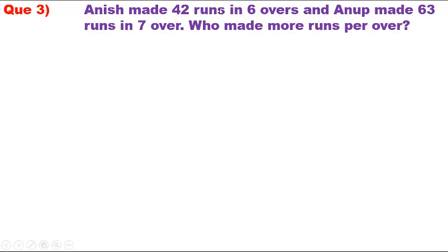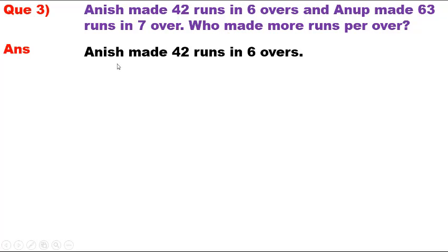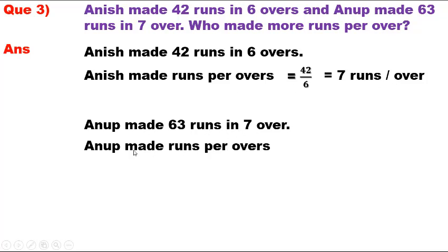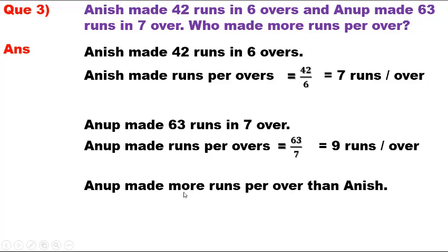Question 3. Anish made 42 runs in 6 overs and Anoop made 63 runs in 7 overs. Who made more runs per over? Anish made runs per over = 42 / 6 = 7 runs per over. Anoop made runs per over = 63 / 7 = 9 runs per over. Therefore, Anoop made more runs per over than Anish.